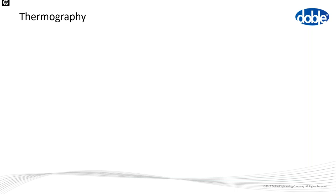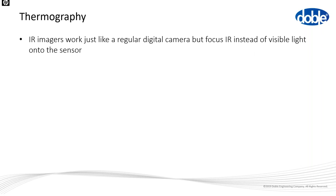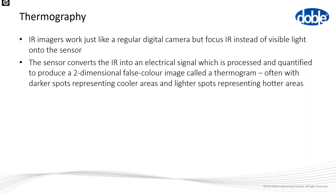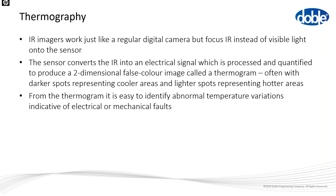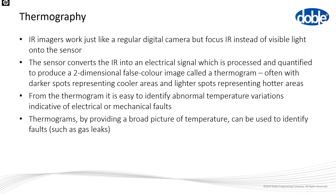We can also use an infrared imager for thermography. It works just like a regular digital camera but focuses on the infrared spectrum instead of visible light. A sensor converts the infrared into an electrical signal, which is converted into a false-colour image called a thermogram — darker colours represent cooler areas and light spots represent hotter areas. From the thermogram we can easily identify abnormal temperature variations indicative of electrical or mechanical faults, such as gas leaks or poor cooling in a particular motor where one part runs hotter than the rest.